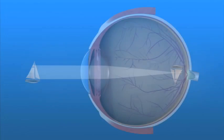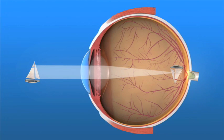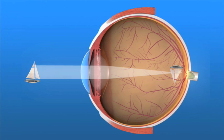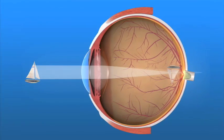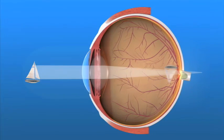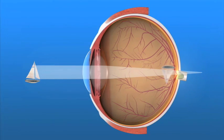Hyperopia, or far-sightedness. This is where the distance between the cornea and the retina is too short. Here, light rays are focused behind the retina instead of on it. Distant objects will look clear, but close objects will appear blurred.